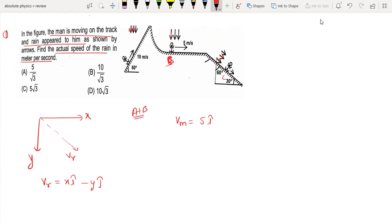The person is running like this. The velocity of rain with respect to man is Vrm = Vr - Vm = (x - 5)i cap - y j cap, where Vm is the velocity of man.